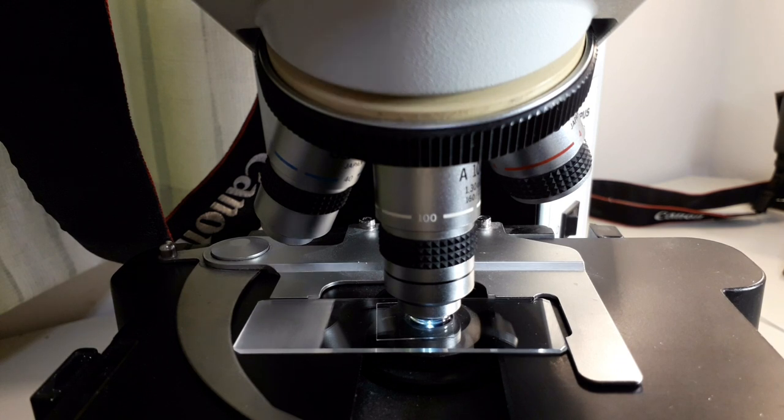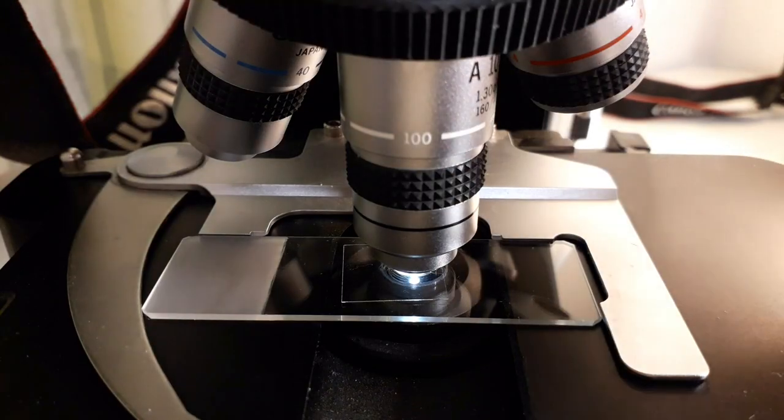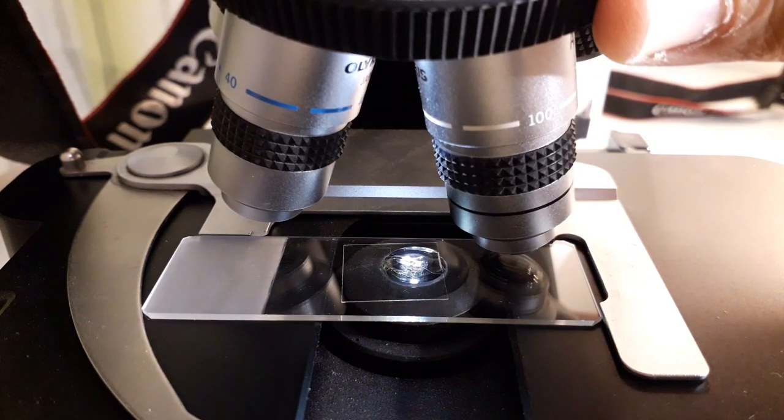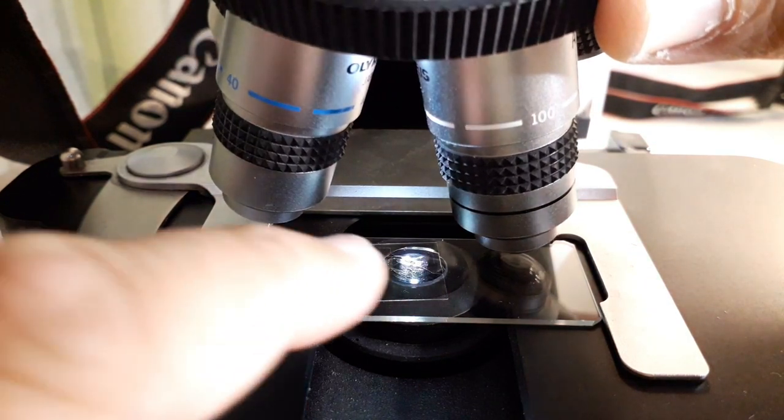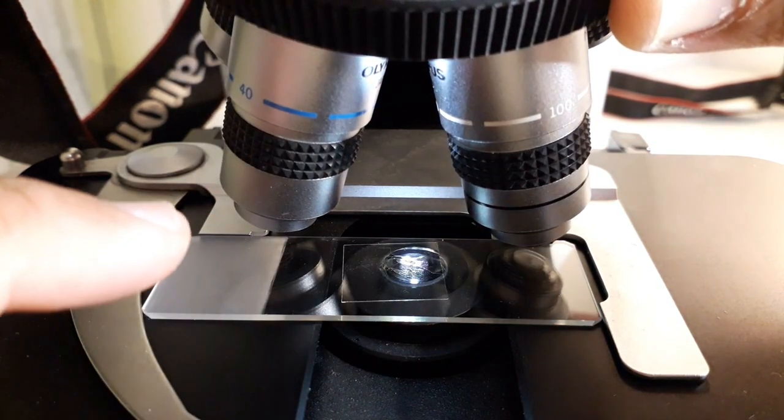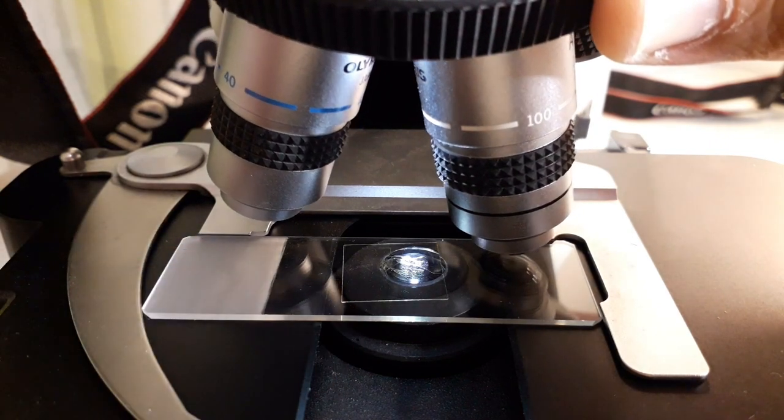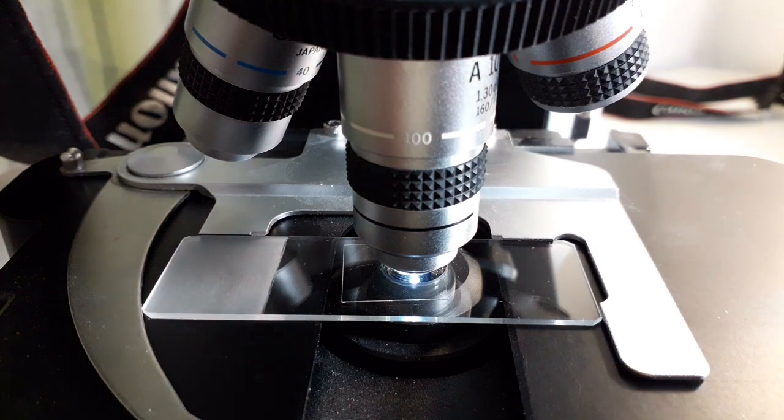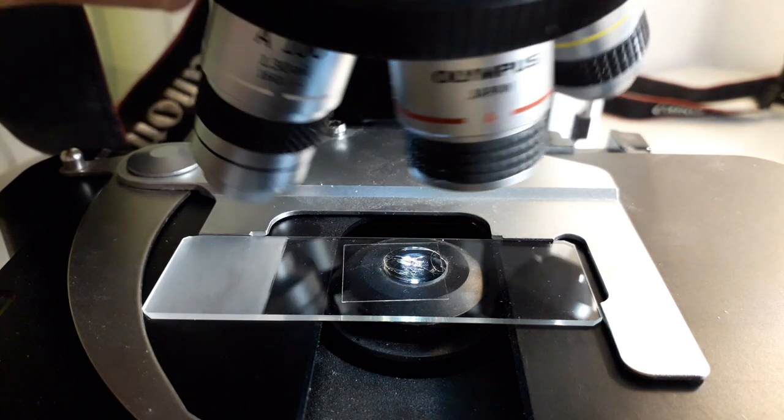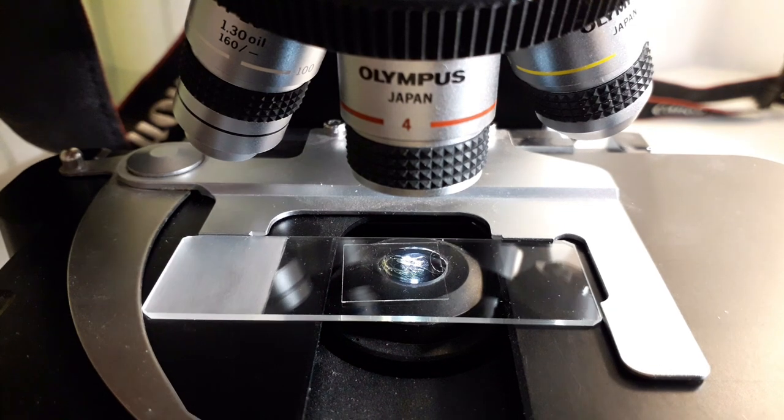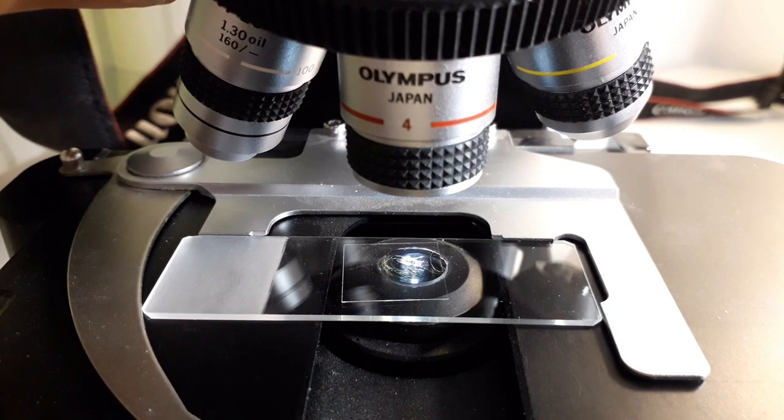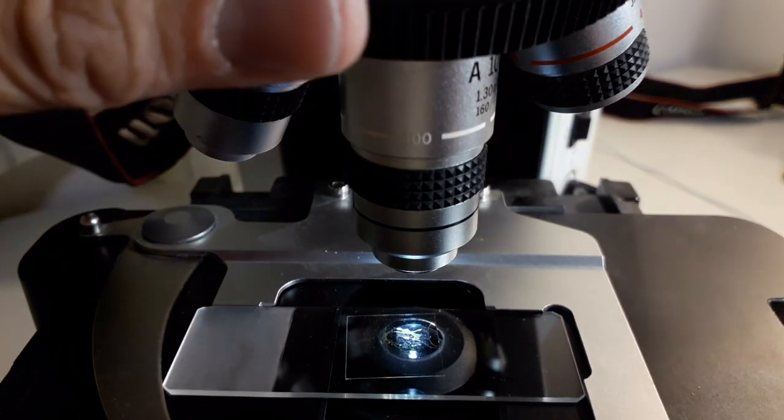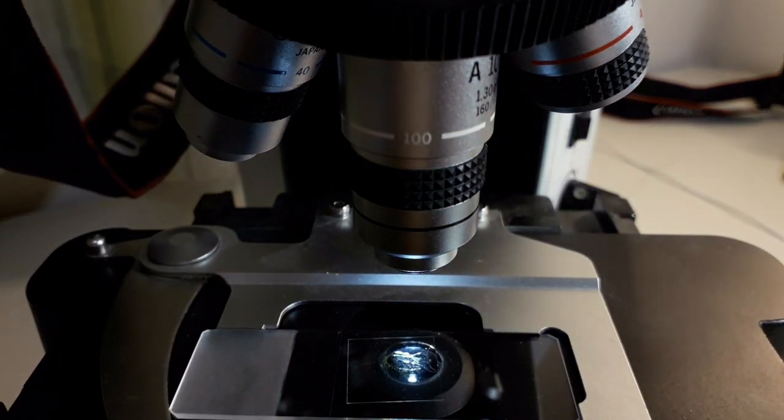Then I can do oil immersion microscopy this way. When I now want to use the 40 times objective, I cannot do this, I cannot switch back because then I'm going to contaminate the 40 times objective with oil. This is exactly one of the things that many beginning students have done and this actually destroyed the 40 times objective. The 4 times objective is okay because there is no way that it's able to contact the oil because the distance is so large, but for the other high power objectives this can be a problem.